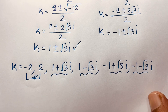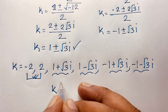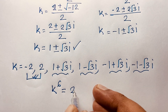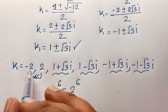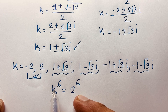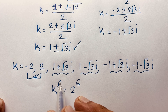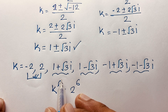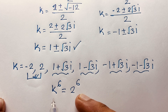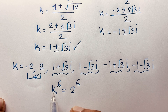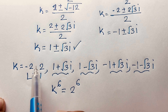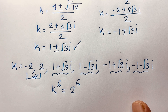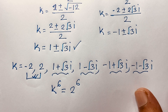Let's check our answer. The question is k to the power 6 equals 2 to the power 6. If we put k equals minus 2: minus 2 to the power 6 — since the power is even, it is always positive — so it equals positive 2 to the power 6. Left-hand side equals right-hand side: 2 to the power 6 equals 2 to the power 6. This confirms our answer.